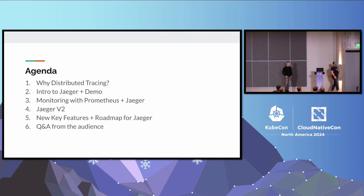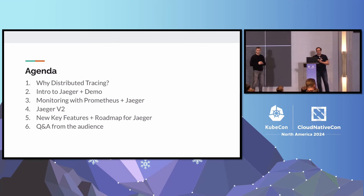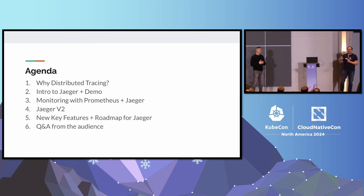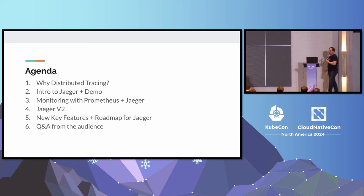We're going to talk a little bit about distributed tracing for those of you who aren't familiar. We're going to give you the basics, explain why it's important, and how it solves problems. We're going to dive into Jaeger and do a couple of demos - one on Jaeger itself, and then a demo incorporating Prometheus and Jaeger together. We'll talk about the exciting new release, Jaeger version 2, which we announced on Monday on the CNCF website. Then we'll cover the roadmap and take questions. We also have a booth on the show floor in the mornings.